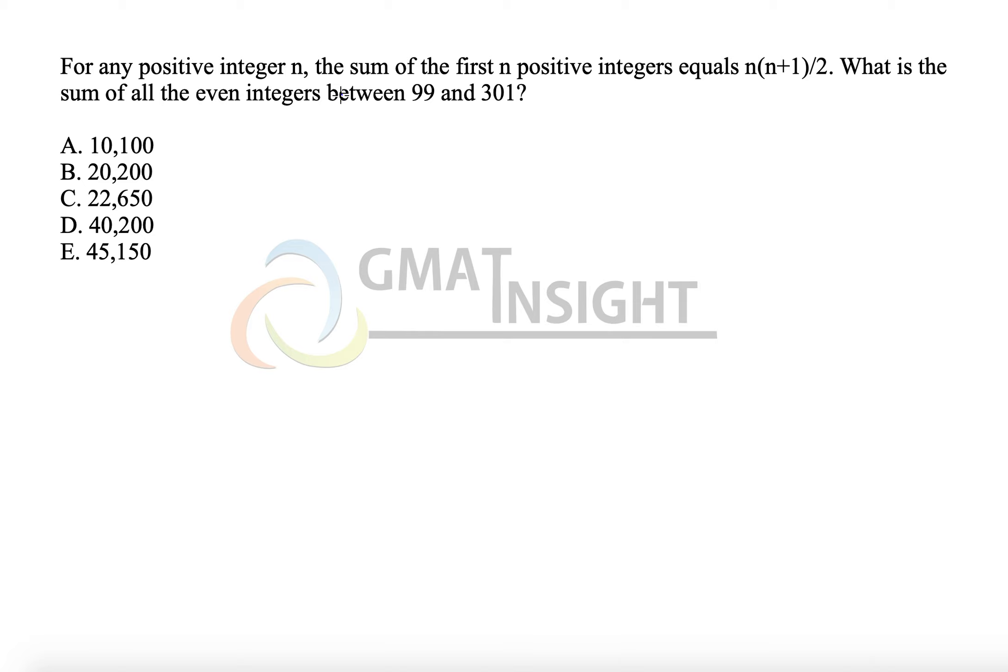For any positive integer n, the sum of the first n positive integers equals n(n+1)/2. That means sigma n, which is 1+2+3+...+n, equals 1/2 times n into n+1.